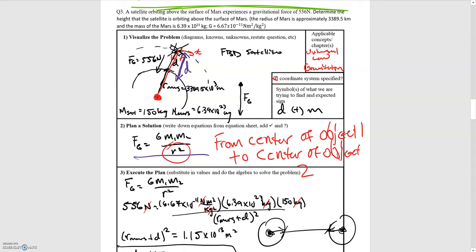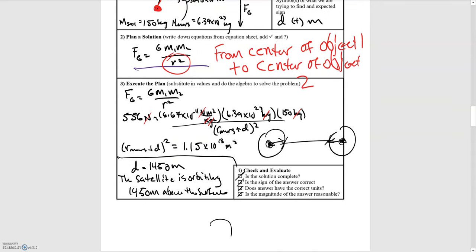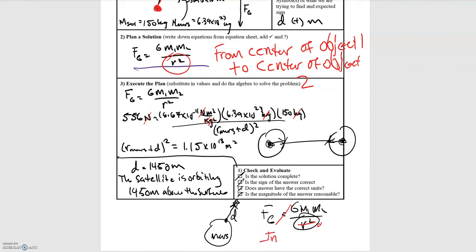For the Mars and satellite problem, you don't want to take this distance D — the distance from the surface — as your R radius in your gravitational equation. Substituting D in here with D squared would be incorrect. It's a common mistake to take the distance from the surface of an object to the other one. You need to take R from the center. That's key.